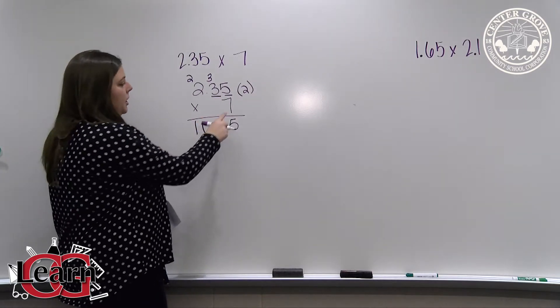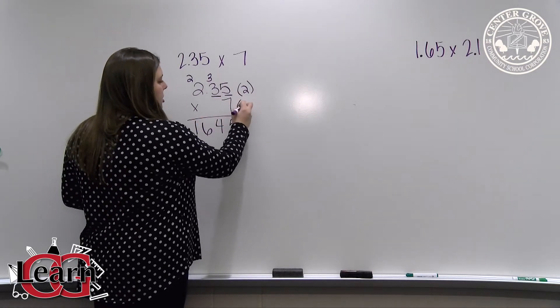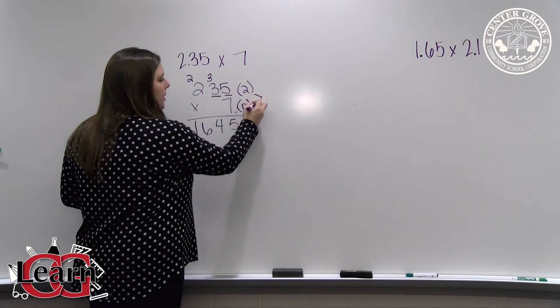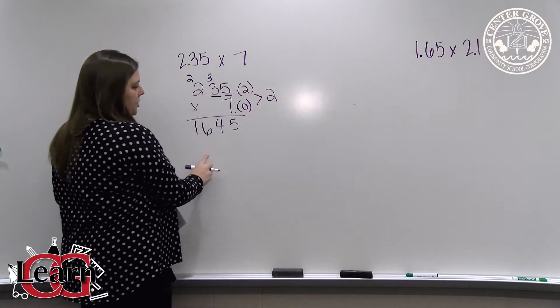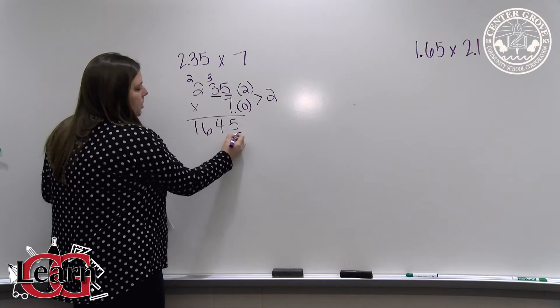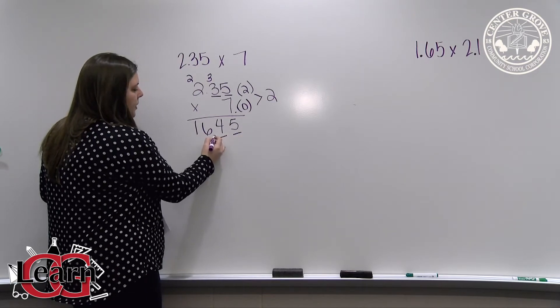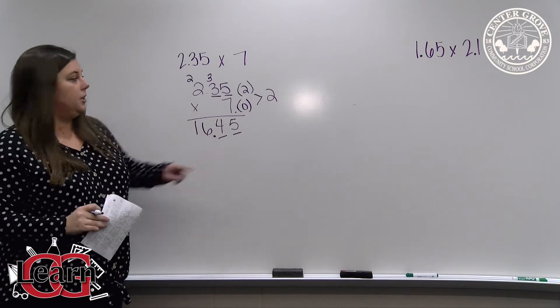In the whole number 7, we do not have any digits to the right of the decimal point. So in our answer, we need two digits to the right of the decimal point. So 1, 2. Our answer is 16 and 45 hundredths.